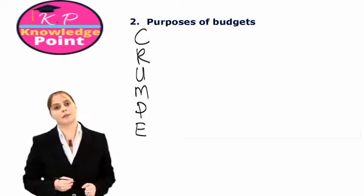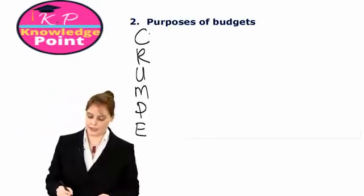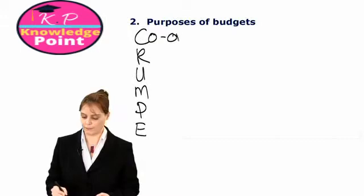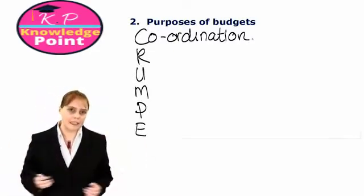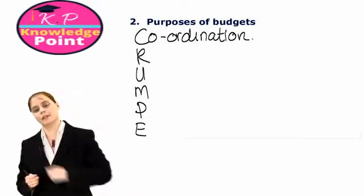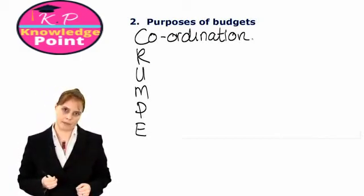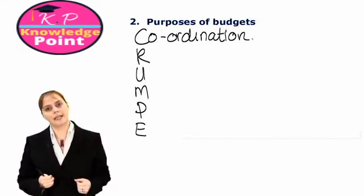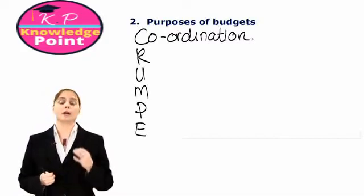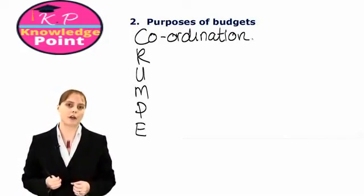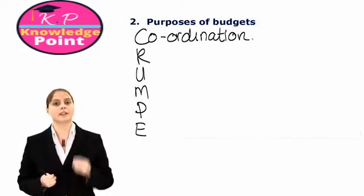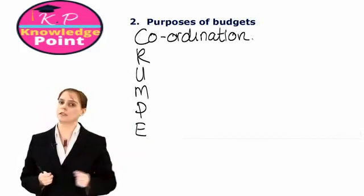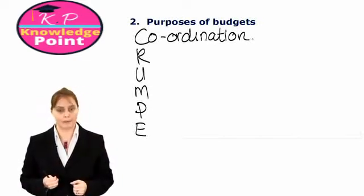The first purpose of the budgeting process is coordination — coordinating the activities of all the different departments within an organisation. So if our sales budget plans to sell a thousand units of our product, the production department needs to know that they have to produce a thousand units in order to meet that sales demand.